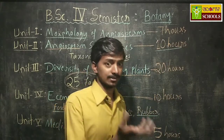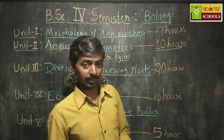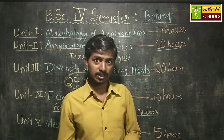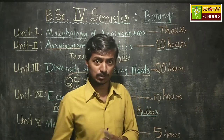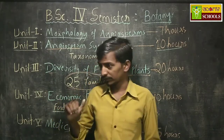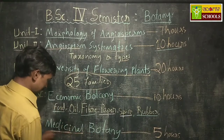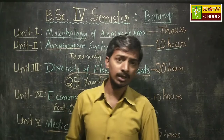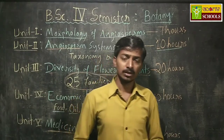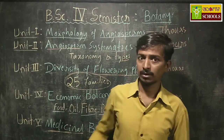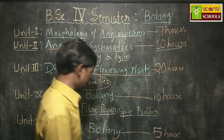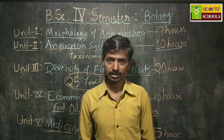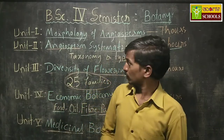In the last unit we study medicinal botany. Medicinal means something used to treat diseases. Any plant part — root, stem, or leaves — used as medicine to treat or cure some diseases is what we call a medicinal plant. Here we have about six to seven medicinal plants to study.